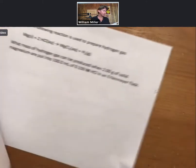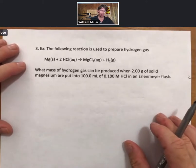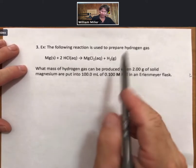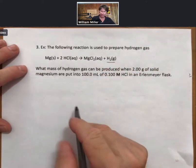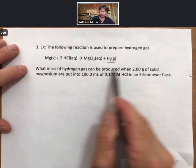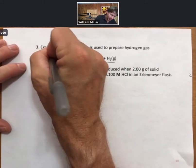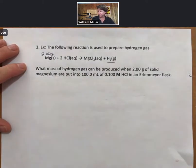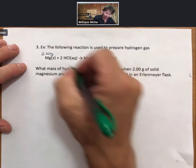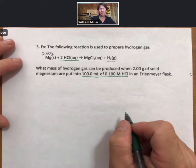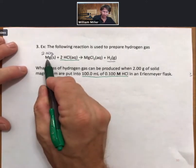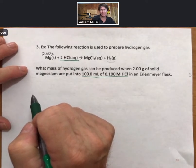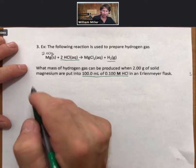We do a lot of these so it's worth doing yet another one. This one is the next level of problem. It says the following reaction is used to prepare hydrogen gas where hydrogen is a product. What mass of hydrogen gas can be produced when 2.00 grams of magnesium are put into 100.0 milliliters of 0.100 molar HCl. We have enough information to determine the moles of magnesium and to determine the moles of HCl. That means two reactants. We can determine the moles. Ladies and gentlemen, we have a limiting reactant problem.